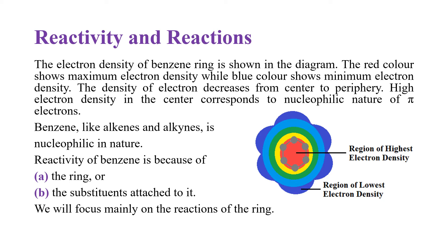Benzene ring में electron density diagram में show की गई है। Red color maximum electron density को show कर रहा है जबके blue color minimum electron density को show कर रहा है। In going from center to the periphery, the electron density is decreasing. This high electron density in the center of benzene ring shows its nucleophilic nature - benzene, alkenes और alkynes की तरह nucleophile होती है।